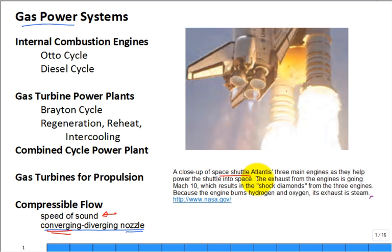Here's a picture of a space shuttle with three main engines as they help power the shuttle into space. So these are the three engines on the shuttle that are firing. And the engine's exhaust is going Mach 10. Mach 10 coming out the back. That is impressive. And you can see some diamond shocks. I am not a shock expert, but they would be where you're releasing the gases.